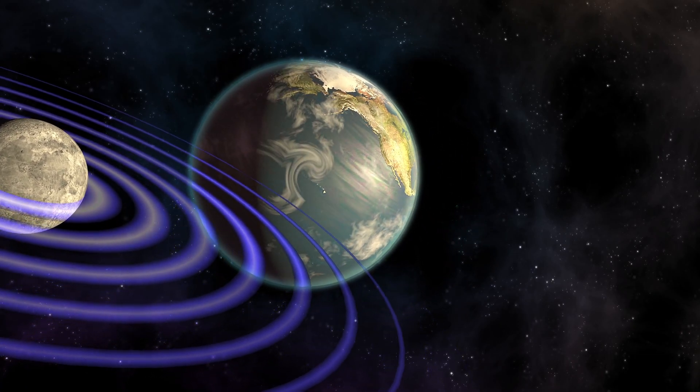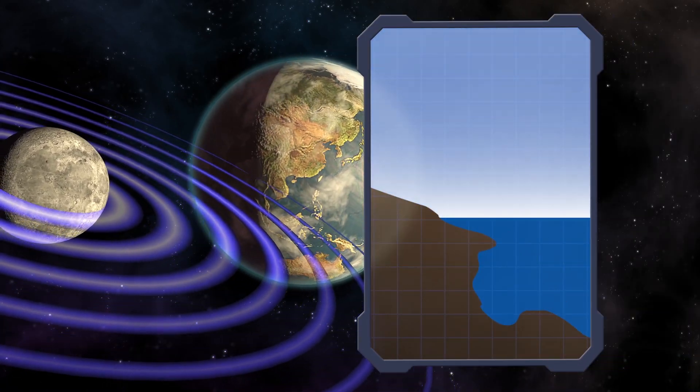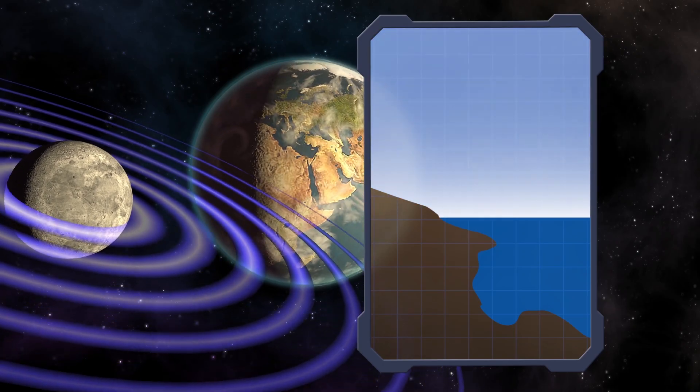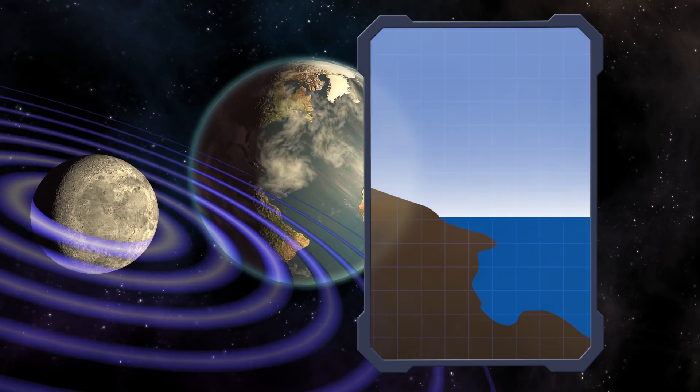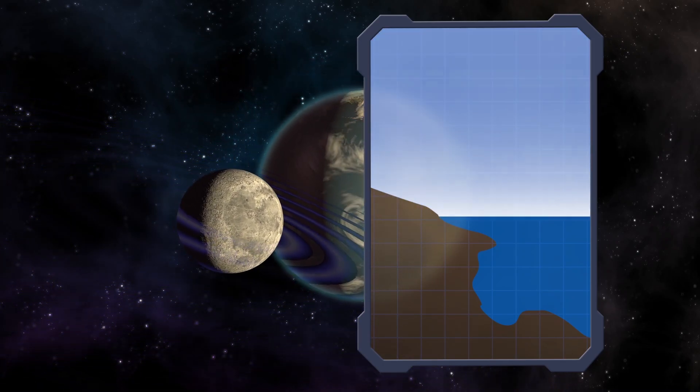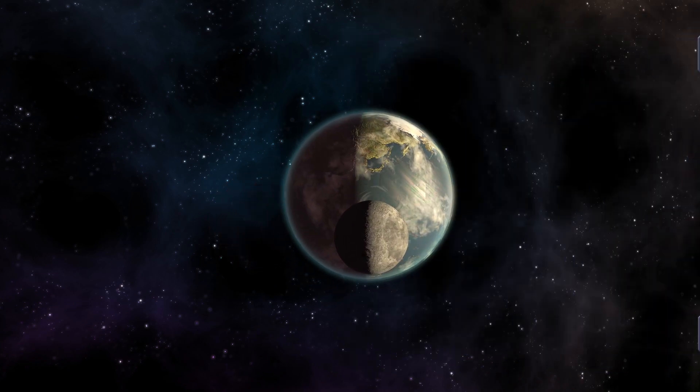Therefore, the Moon stabilizes Earth's climate. Besides, the Moon's gravitational pull generates the so-called tidal force, which played an important part throughout the evolution of terrestrial life.